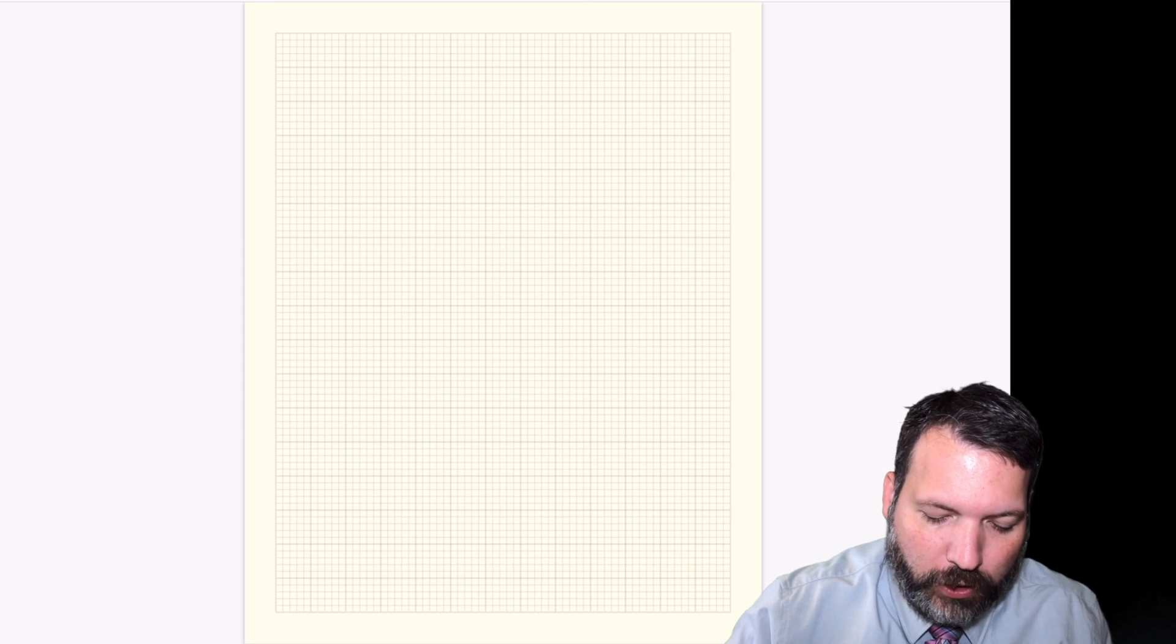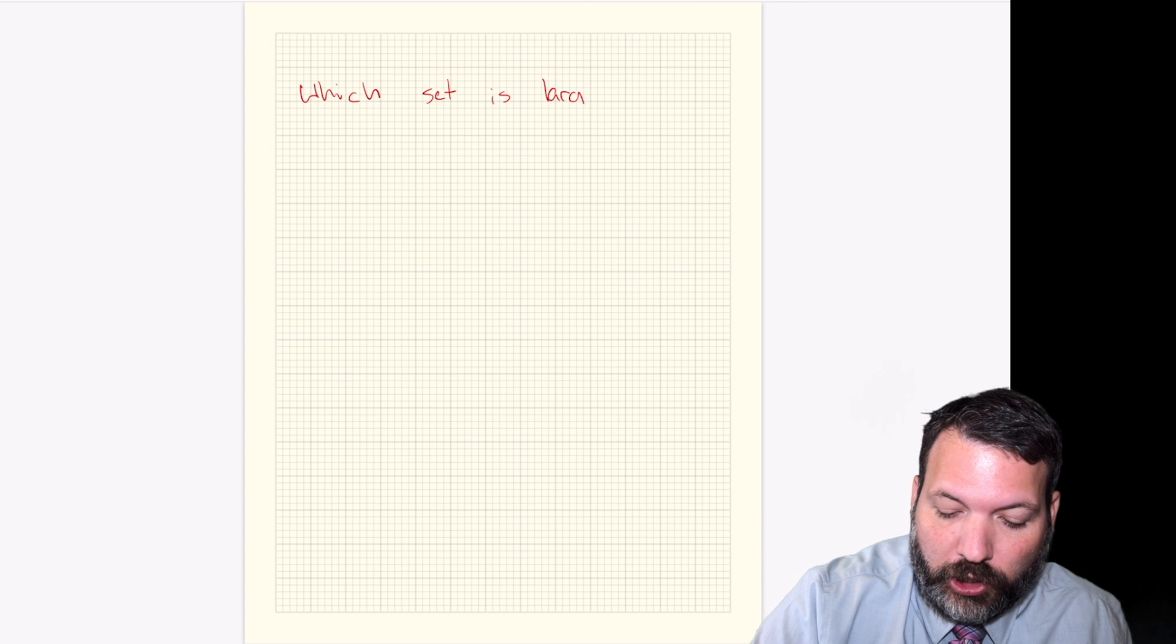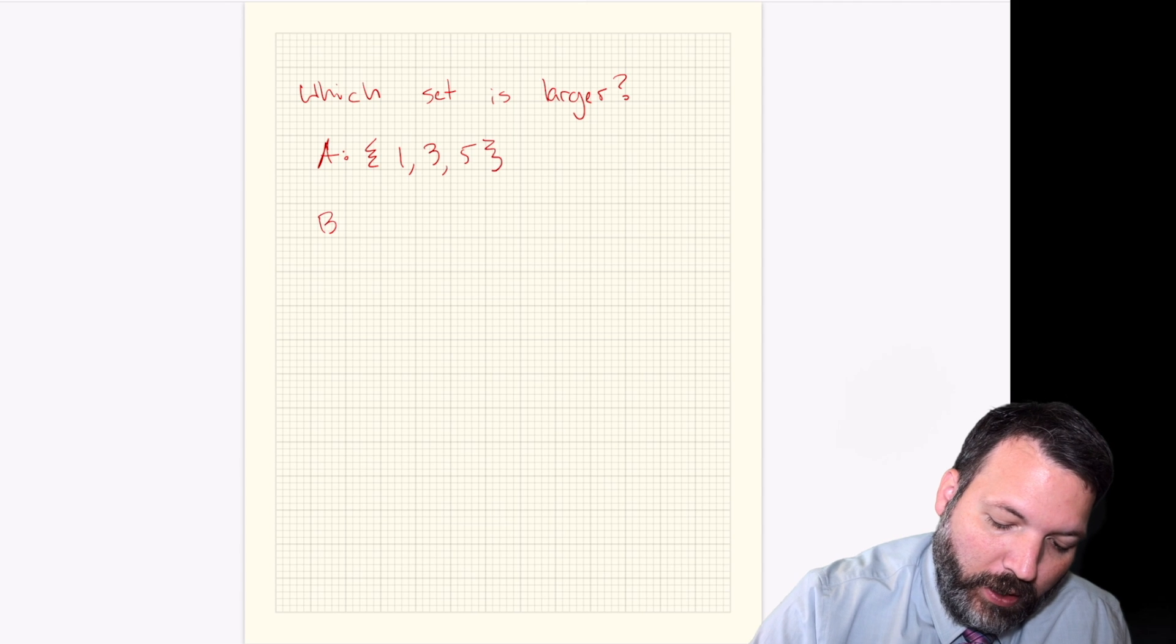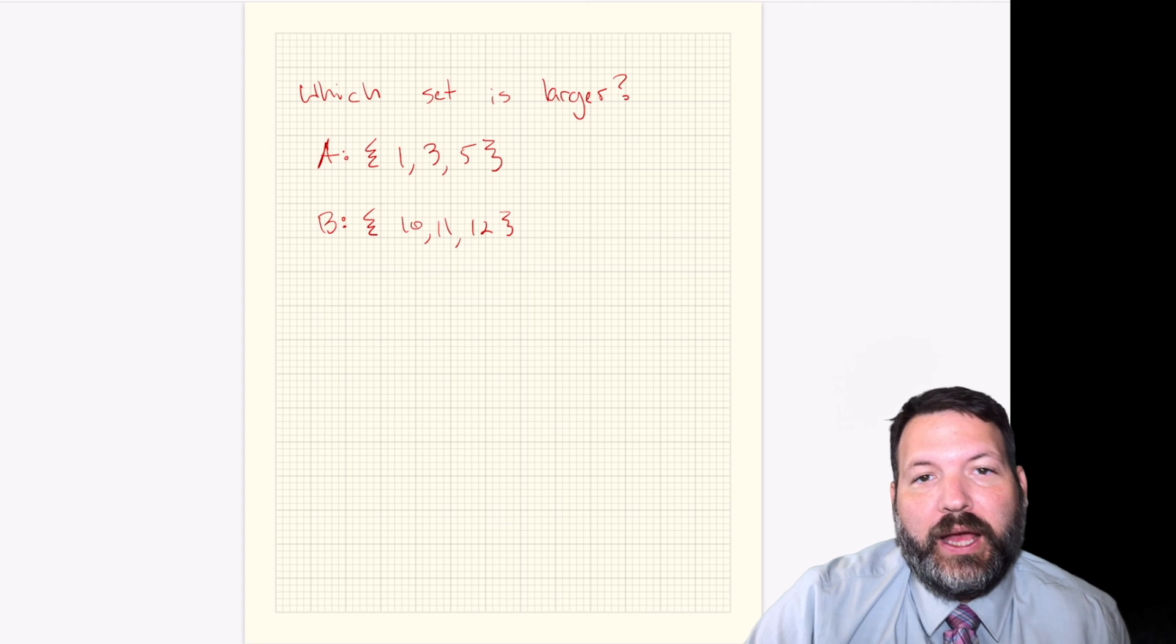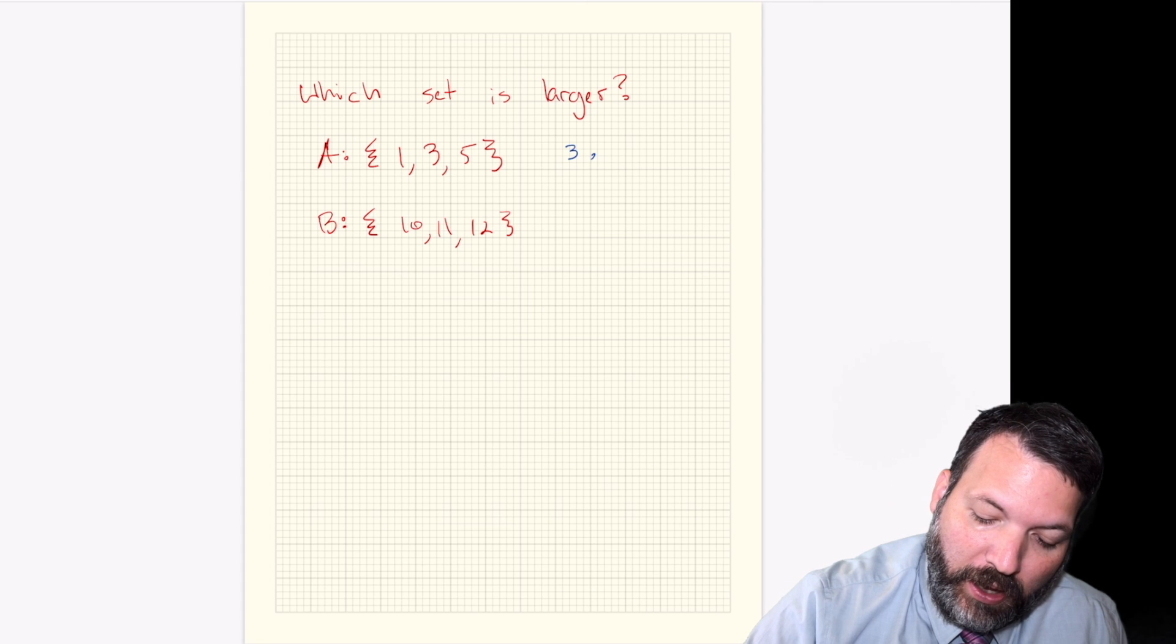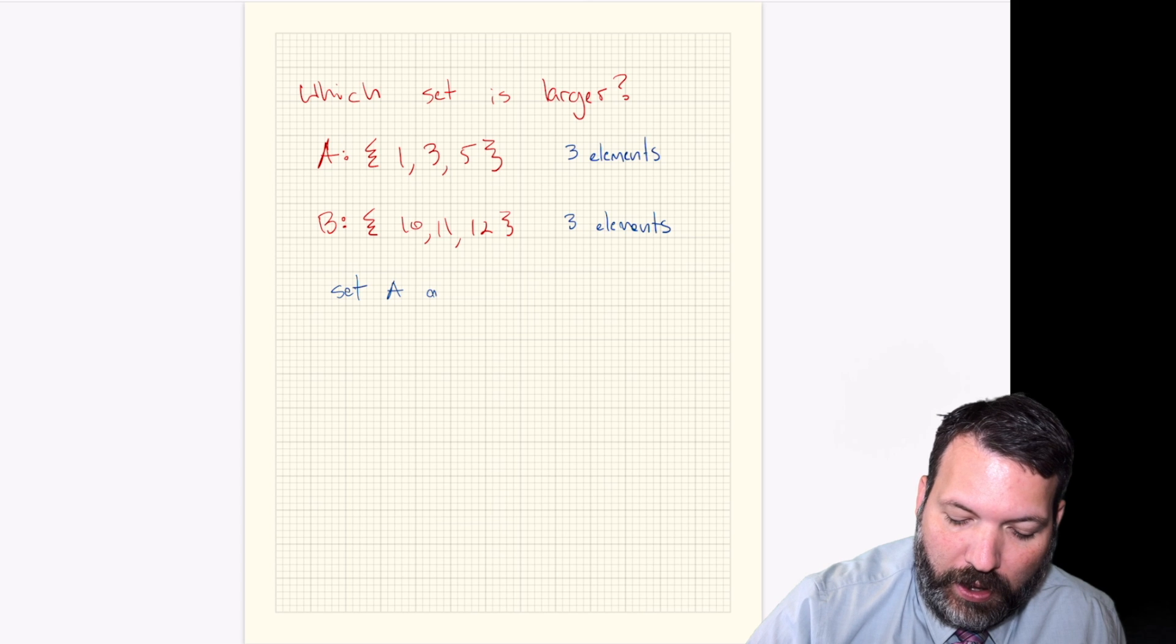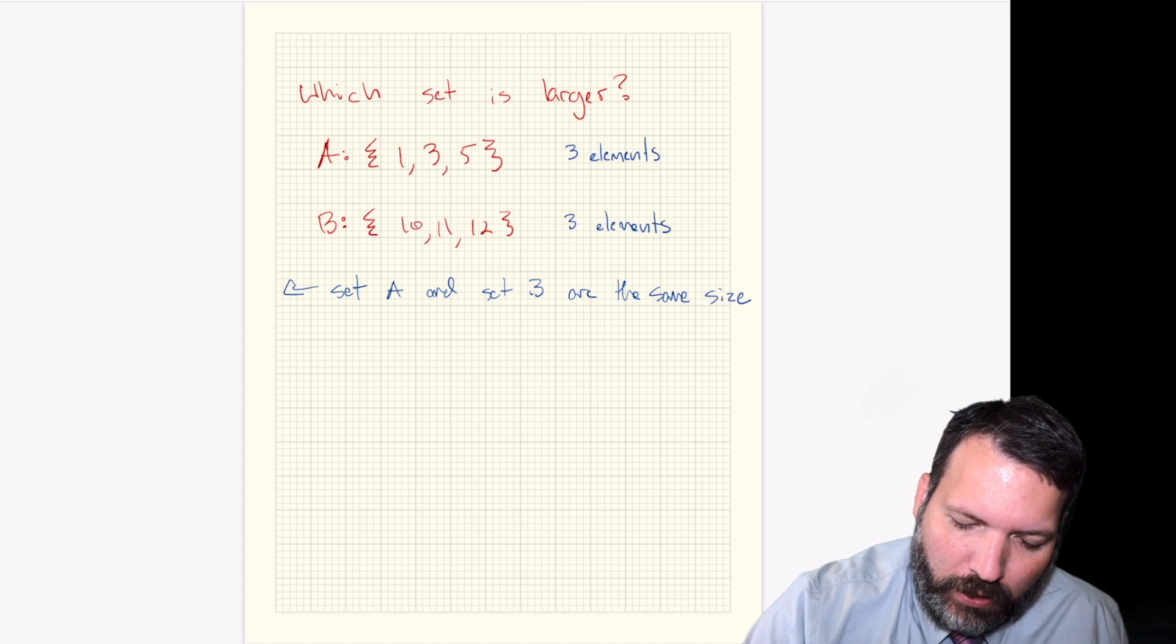So here is what you might use a function for. Imagine I asked you, which set is larger? And I wrote down set A here, which is going to be the elements 1, 3, and 5. And then I'm going to make up set B, which will be the elements 10, 11, and 12. If we were going to answer which set is larger, one thing we might do is count up the number of elements and then compare them, right? So set A has three elements there, set B also three elements. And so in this case, we would say, set A and set B are the same size.